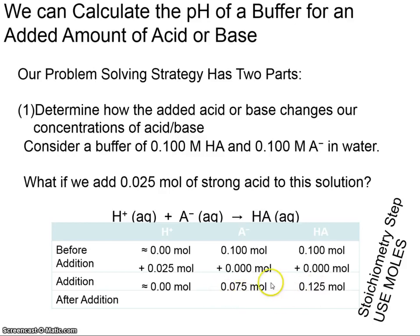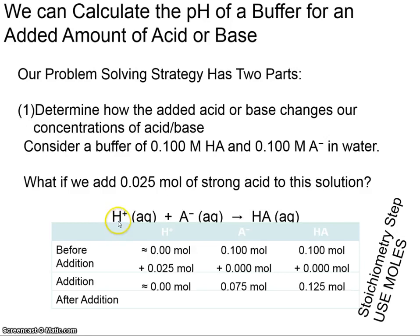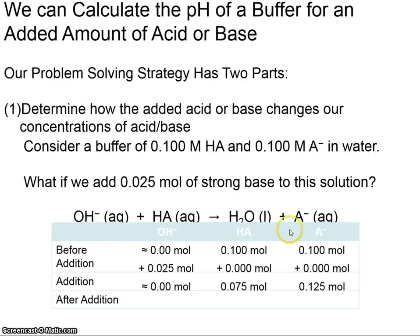Now you've got new numbers. If instead you add 0.025 moles of strong base, you increase the conjugate base by 0.025 moles and decrease the conjugate acid by 0.025 moles. Make sure you have the right stoichiometry for the balanced chemical equation — whether you're adding OH⁻ or H+. Acid addition increases conjugate acid and decreases conjugate base; base addition does the opposite.